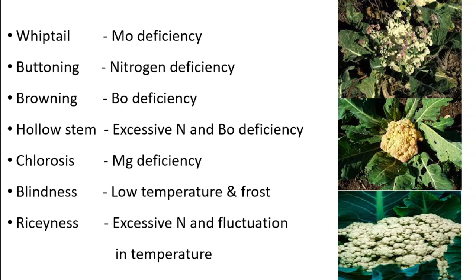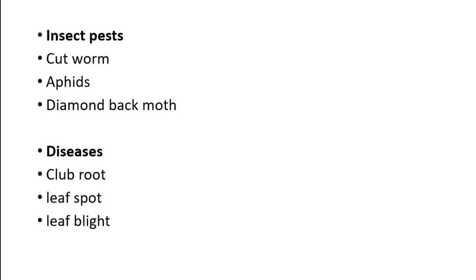Important insect pests are cutworm, aphids, and diamondback moth. Important diseases are club root, leaf spot, and leaf blight. These important insect pests and diseases will be discussed in detail in another video on cole crops.